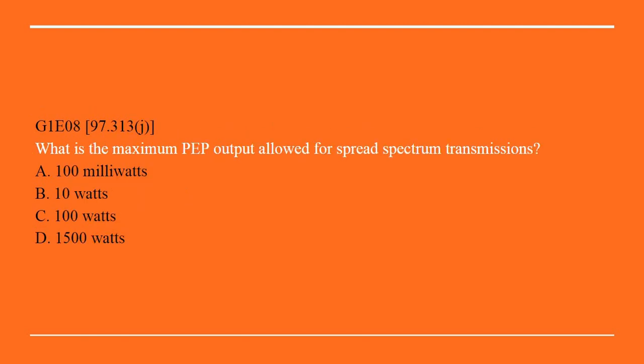G1E08: What is the maximum peak envelope power output allowed for spread spectrum transmissions? A. 100 mW. B. 10W. C. 100W. Or D. 1500W. Correct answer is B: 10W.